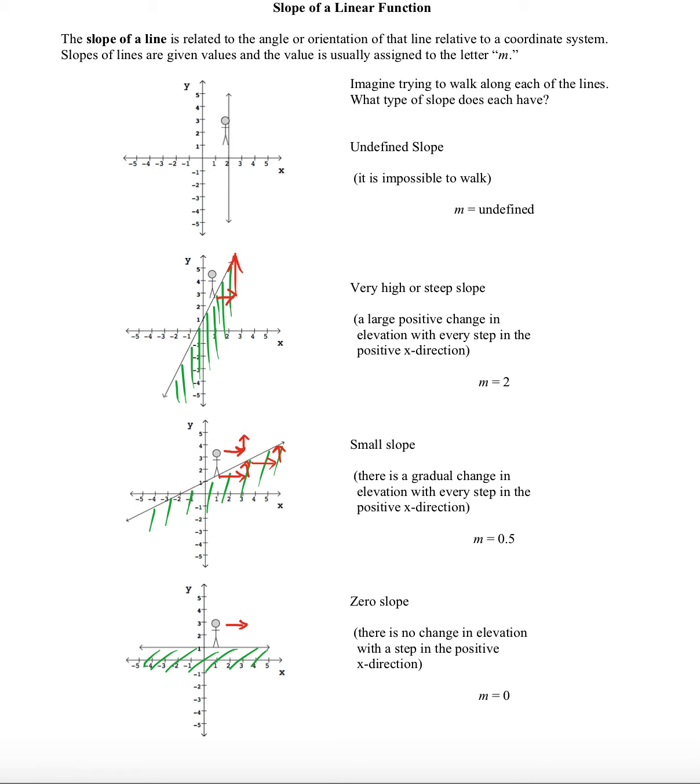And so the steeper we go with our hill, the larger the m value becomes, until we get to the most extreme example, which would be like climbing a cliff. And in this case, it would be very difficult to walk on a slope like this—not just difficult, but impossible.